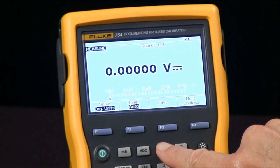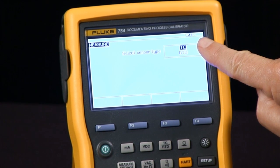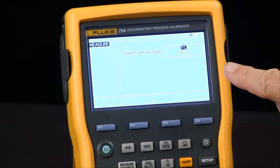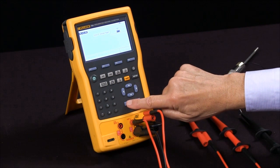All we have to do at this point is push the thermocouple RTD button. We get a choice of a thermocouple or an RTD. I'm going to arrow down, highlight the RTD, and hit enter.